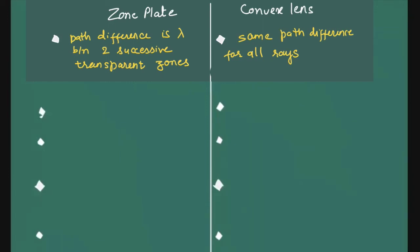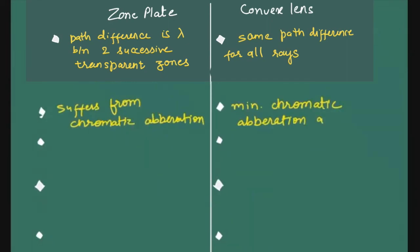In zone plate, the chromatic aberration is severe. Whereas, in convex lens, there is not a lot of chromatic aberration. If you are using a thin lens, chromatic aberration is really minimum. So you can say that zone plate suffers severe chromatic aberration as compared. It is there, but only for thick lenses.